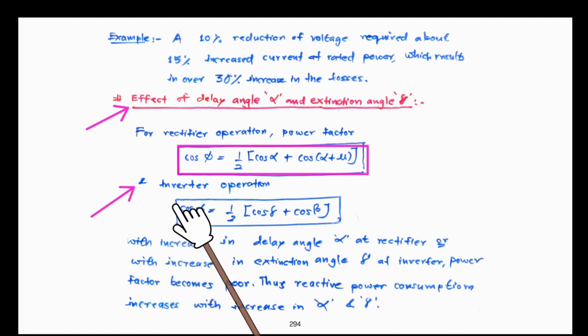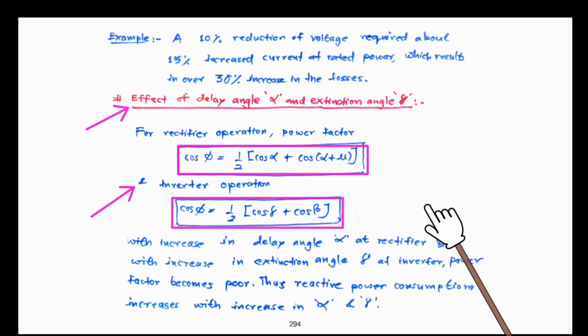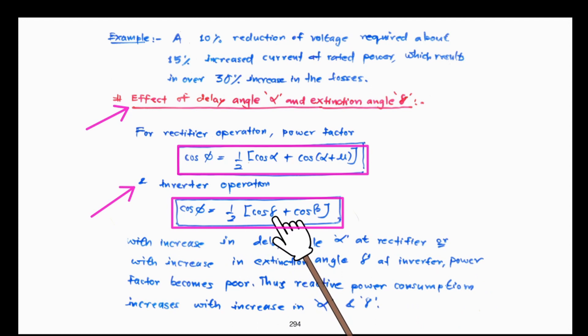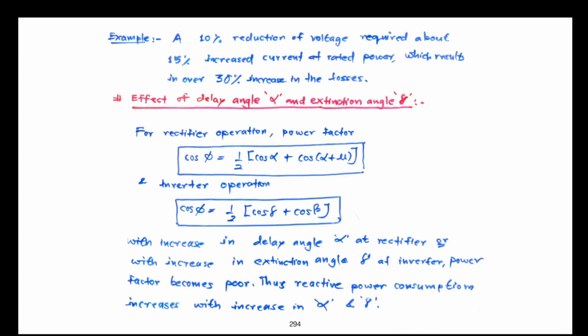Similarly, at the inverter end, the power factor equation is: cos phi equals one-half times (cos gamma plus cos beta). With variation in the extinction angle depending upon the operating conditions of the HVDC controller, gamma will keep varying and consequently phi will also vary. Since alpha and gamma always have some finite values even in steady state, the reactive power consumption always increases and is always required for the stable operation of HVDC converters.